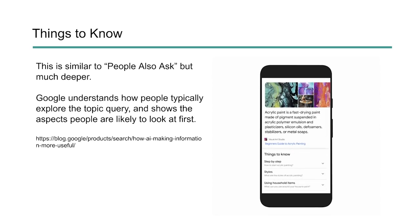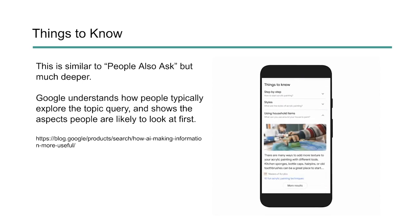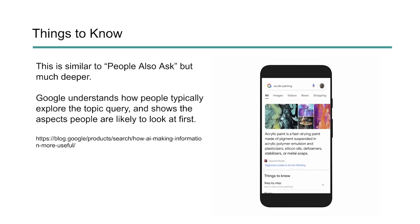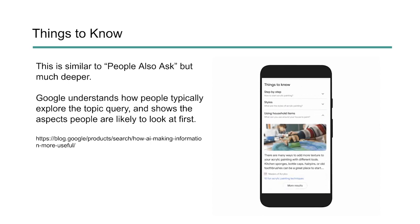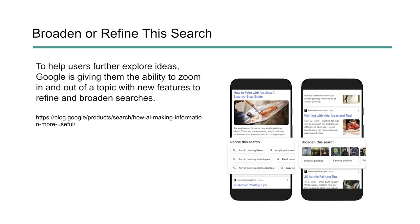This is a very interesting feature because it's not just questions from users — it's taking all the data Google has, aggregating it into the most explored parts or the aspects people are most likely to do first, and walking them through the process. Google is also expanding the ability to broaden or refine your search, letting users zoom in and out of a specific topic. You get options like 'Refine this search' for deeper keyword exploration, or you can broaden it to go up a level, covering the entire topic journey from a very high level to a very refined level.